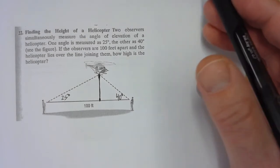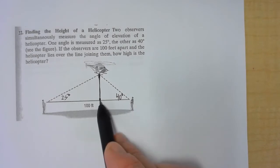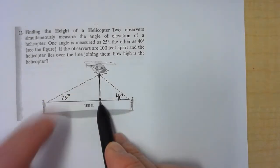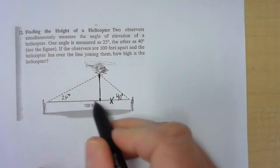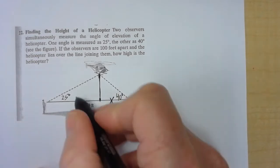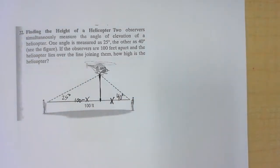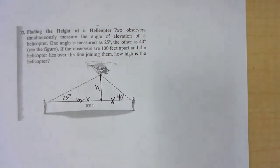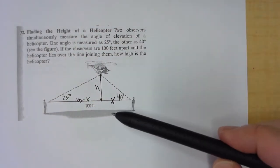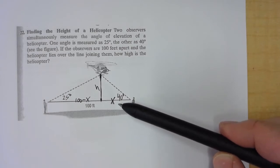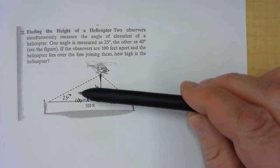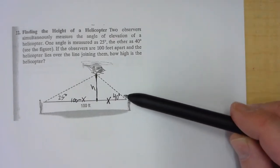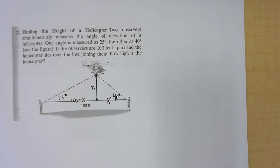I want to know how high the helicopter is above the people. I used right triangle trigonometry and split it up into two parts. From one person to a point below the helicopter is x, and the other part is 100 minus x. We want to know the height h. You have to set up two ratios because there are too many variables. I found a ratio for each triangle and then algebraically solved for x. Go ahead and try it.